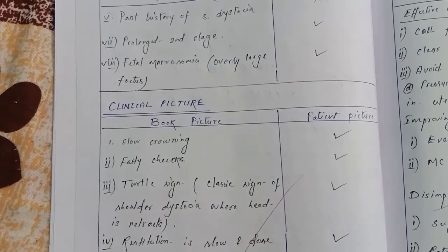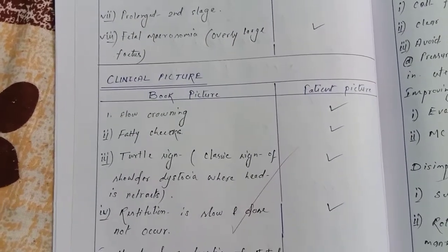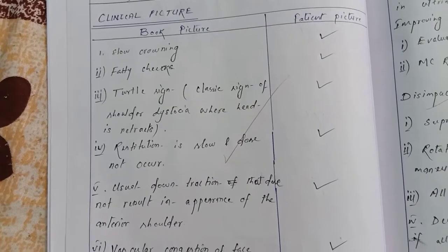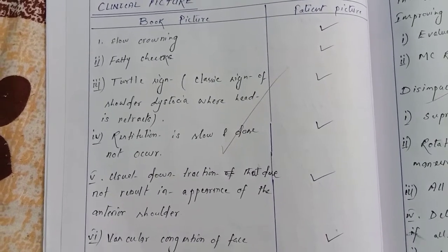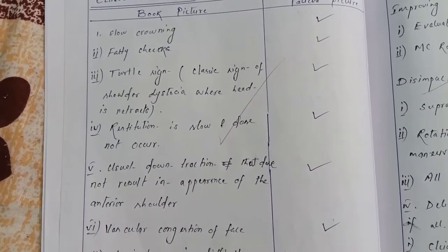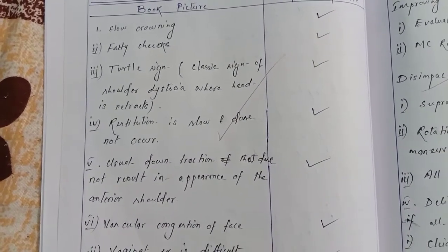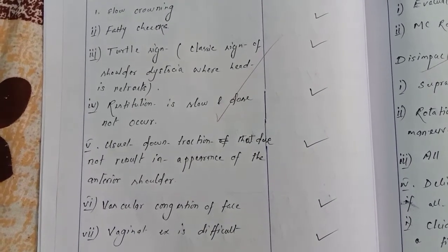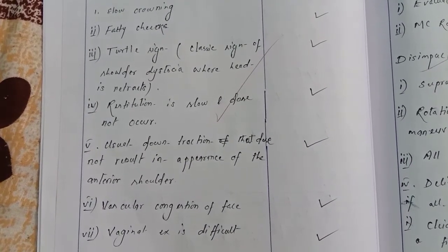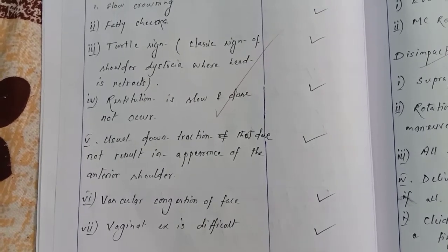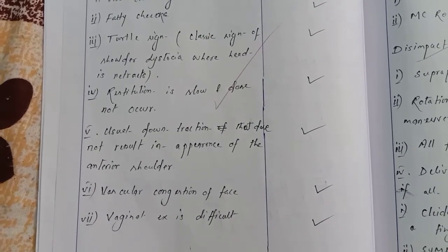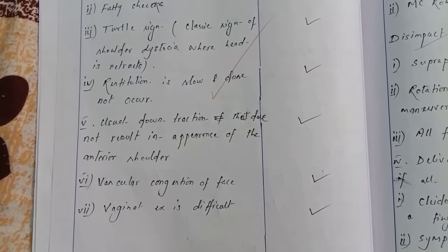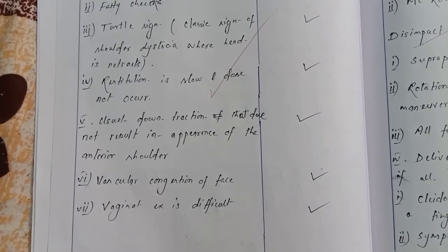Clinical features: slow crowning, fatty cheeks, turtle sign, restitution is slow and does not occur, usual downward traction does not result in appearance of the anterior shoulder, and vascular congestion of the face. Vaginal examination is difficult.